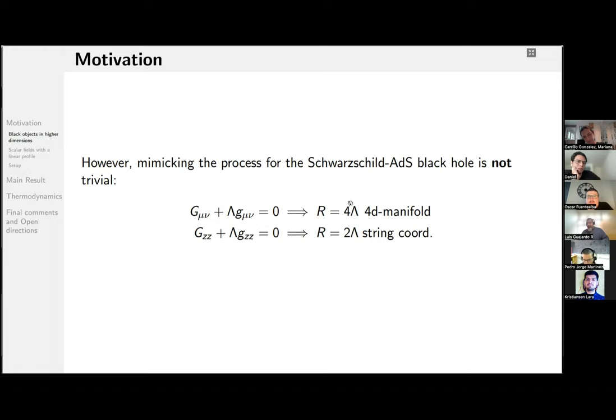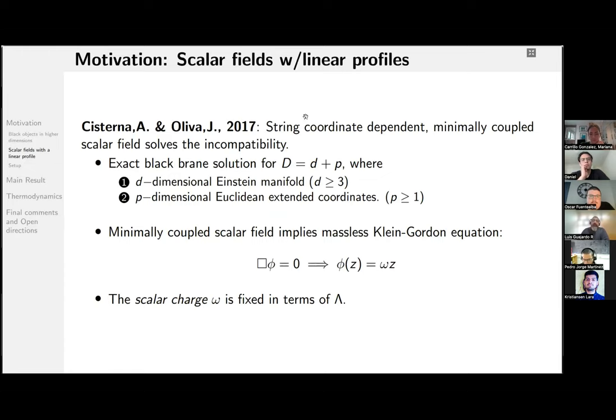And this inconsistency was observed and solved by Cisterna and Oliva a few years ago, who introduced a scalar field minimally coupled to gravity to solve the incompatibility. They proposed that the minimal scalar field is depending only on the string coordinate. They found exact solutions for arbitrary dimensions in which you can also include additional extended coordinates. The price to pay is that for any additional coordinate, you have to include an additional scalar field to match everything. But here, the more important thing is